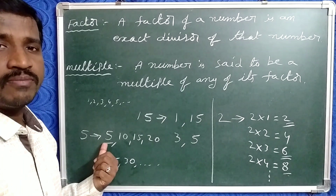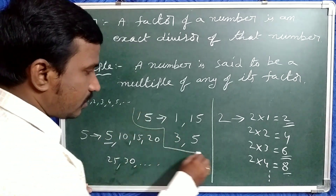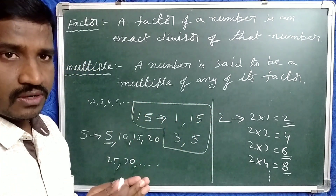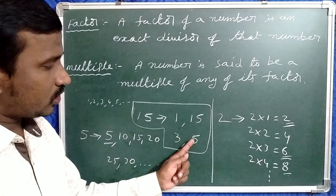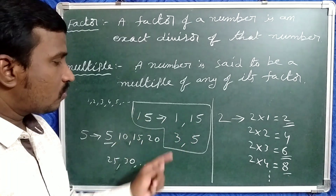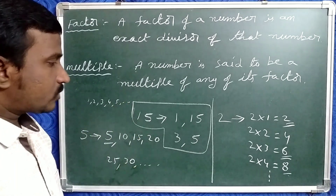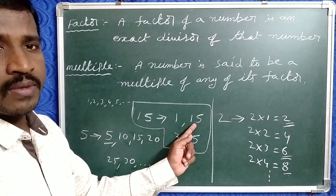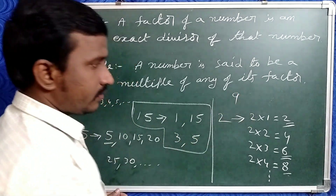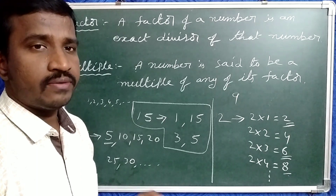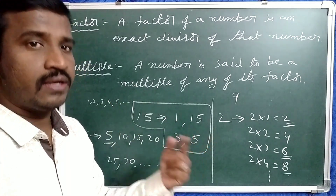So the least multiple is itself, but the highest multiple is not defined. But in the case of factors, the set of factors is a finite and countable set. So 15 has 4 factors: 1, 2, 3, 4. The least factor is 1 — so 1 is the least factor of every number and 1 is a factor of every number. The highest factor of a given number is the number itself. For example, take 9: the least multiple of 9 is 9 itself, the least factor of 9 is 1, and the highest factor of 9 is 9.